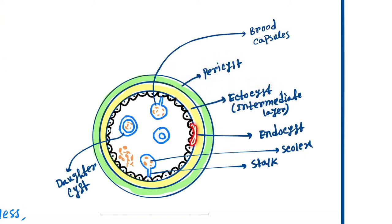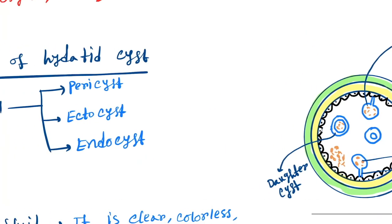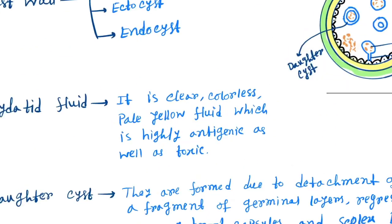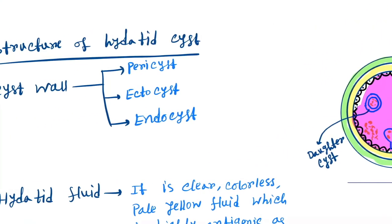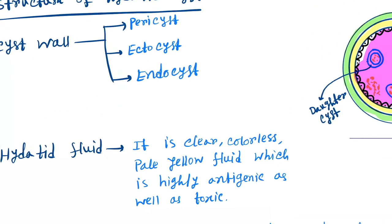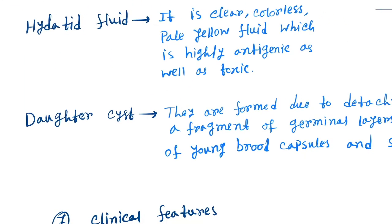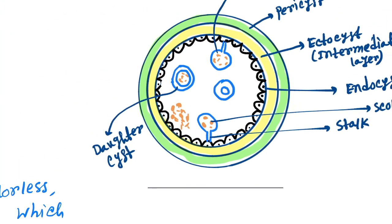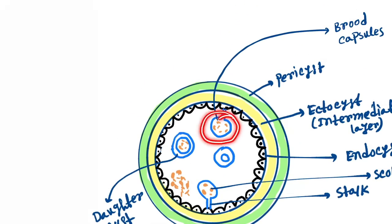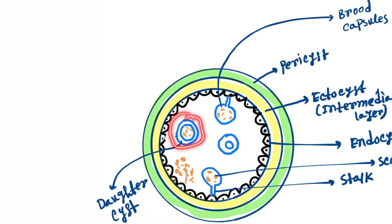Now hydatid fluid. This area contains the hydatid fluid. In nature it is colorless, clear, pale yellow fluid which is highly antigenic as well as toxic. Now daughter cyst. These cysts are called the daughter cysts and these are called the brood capsules. The daughter cysts are formed from the brood capsules by the process called endogenous budding.